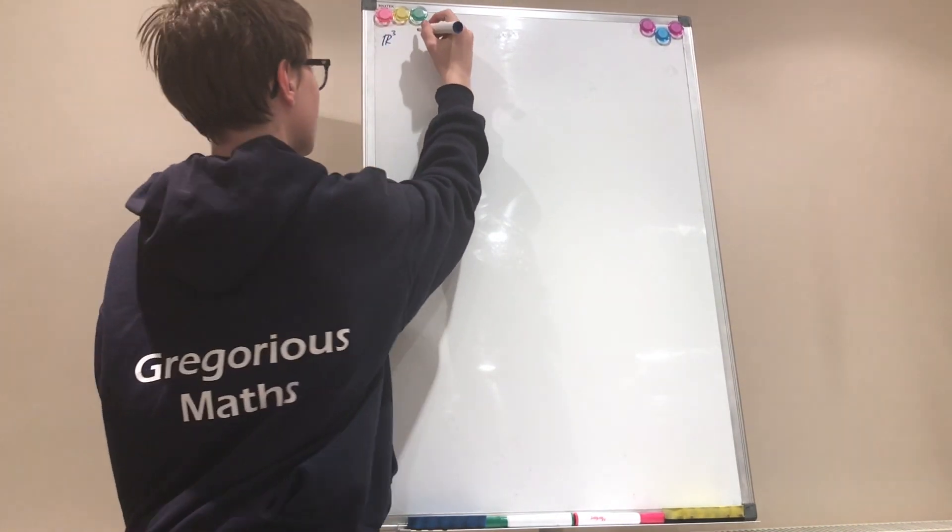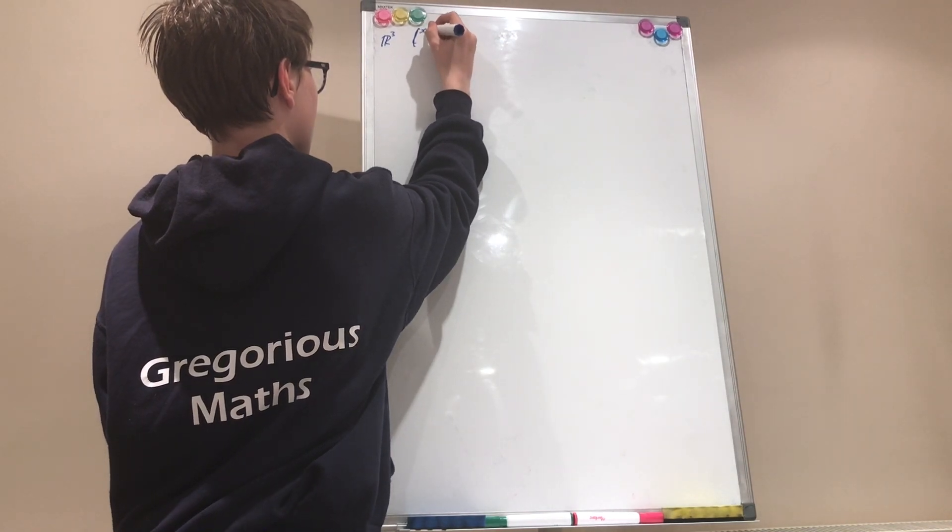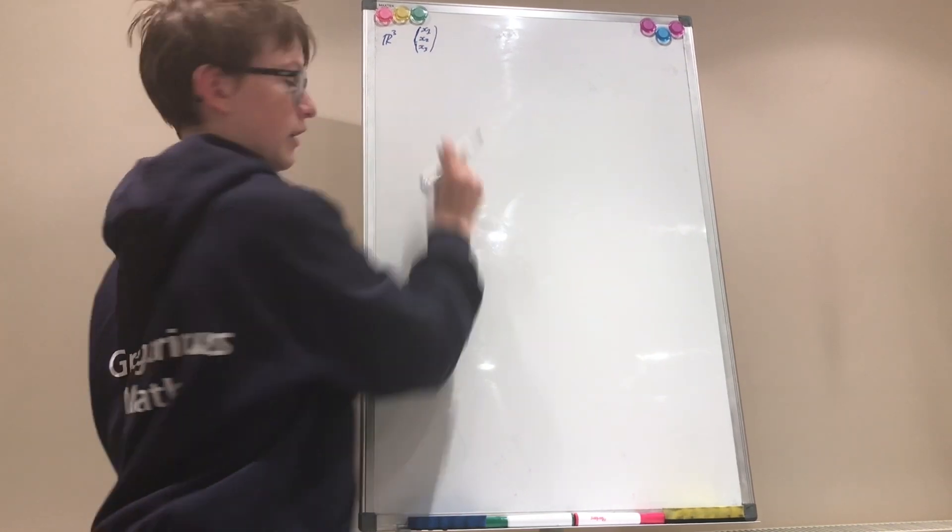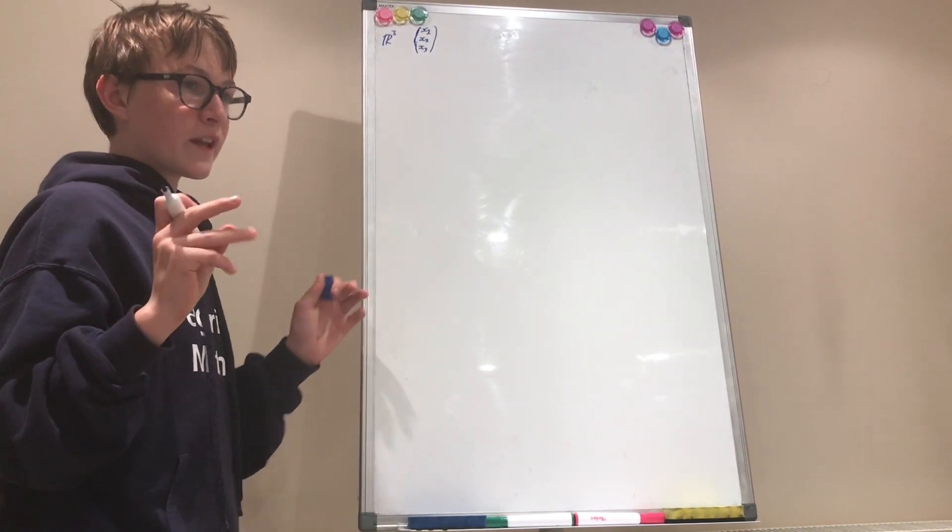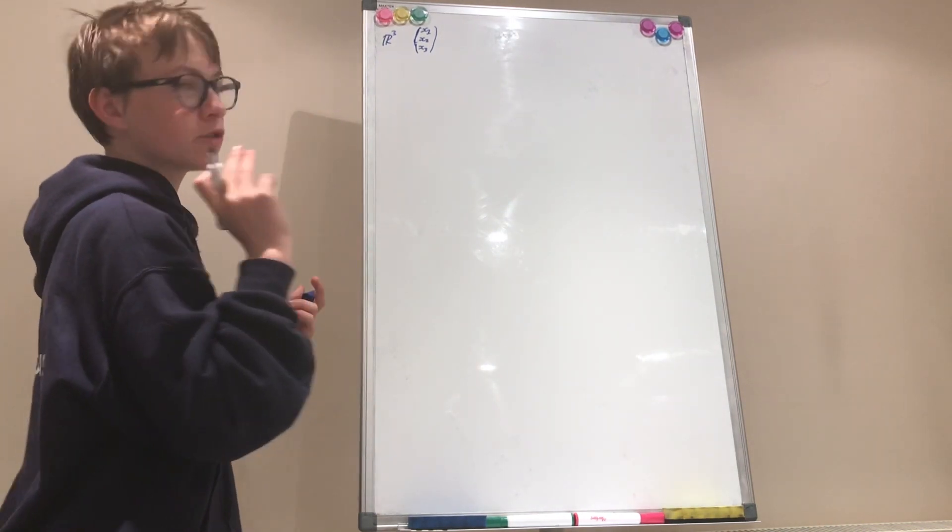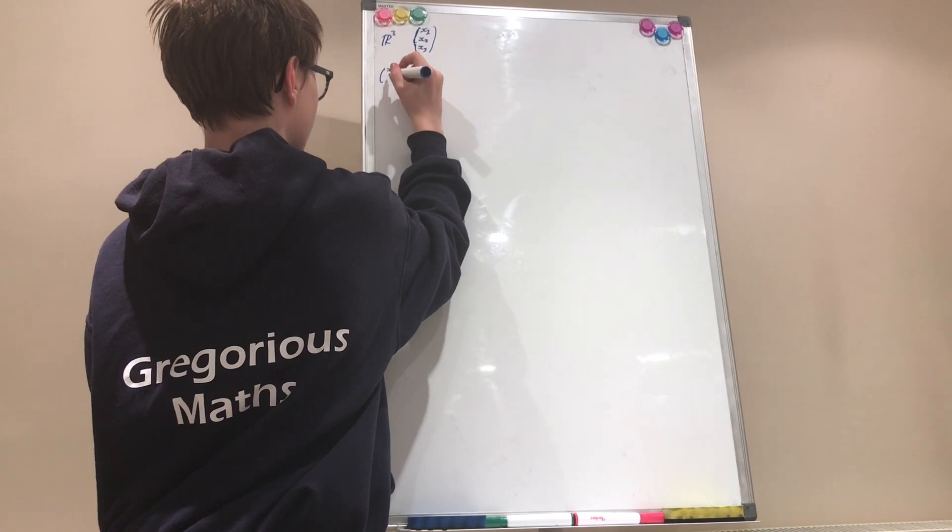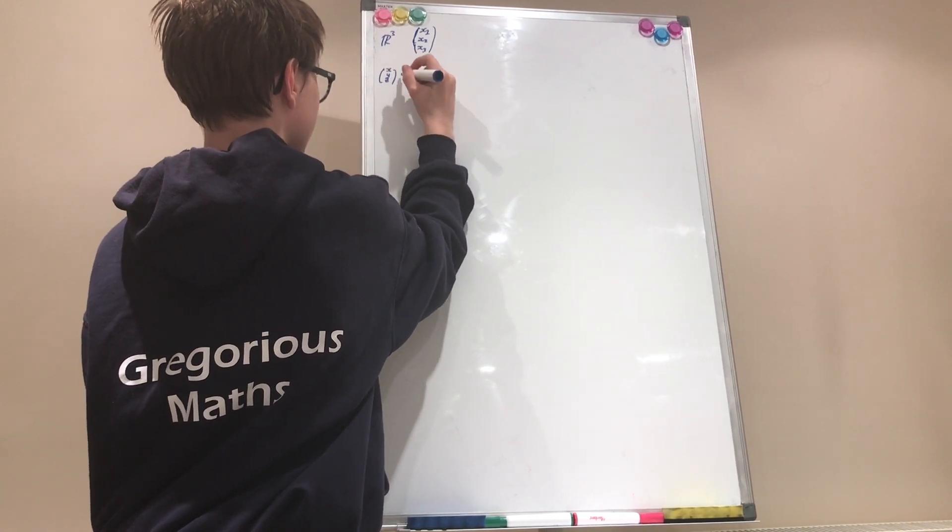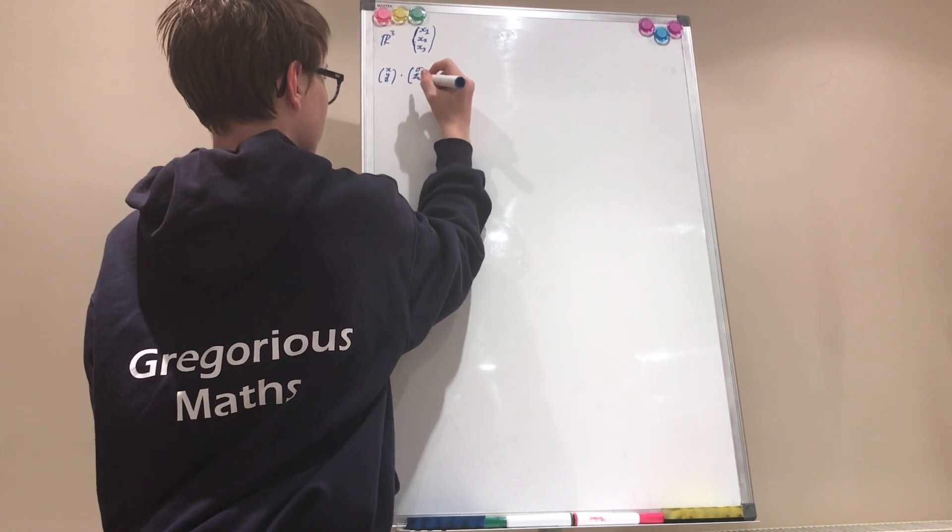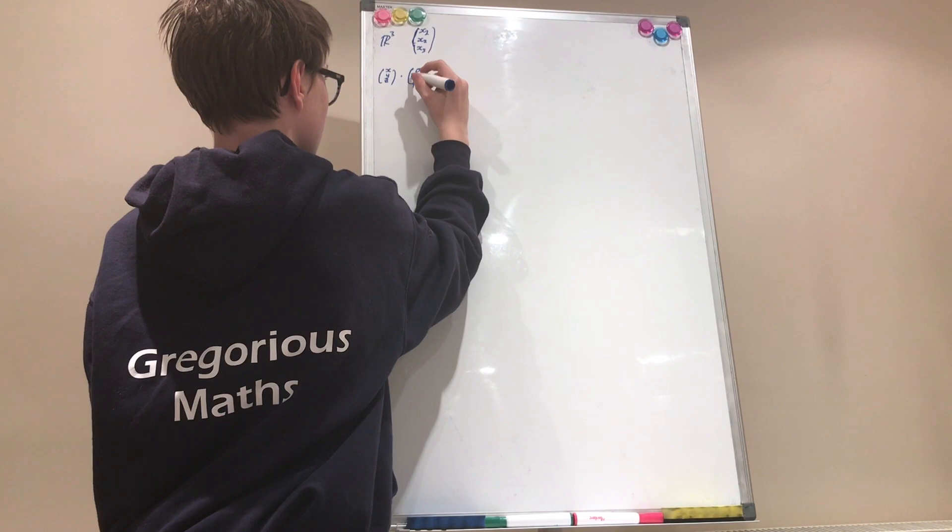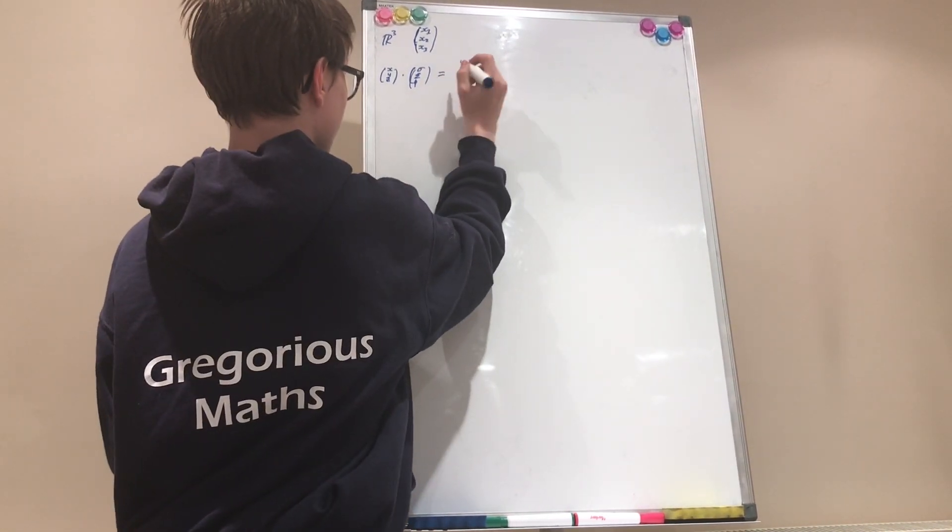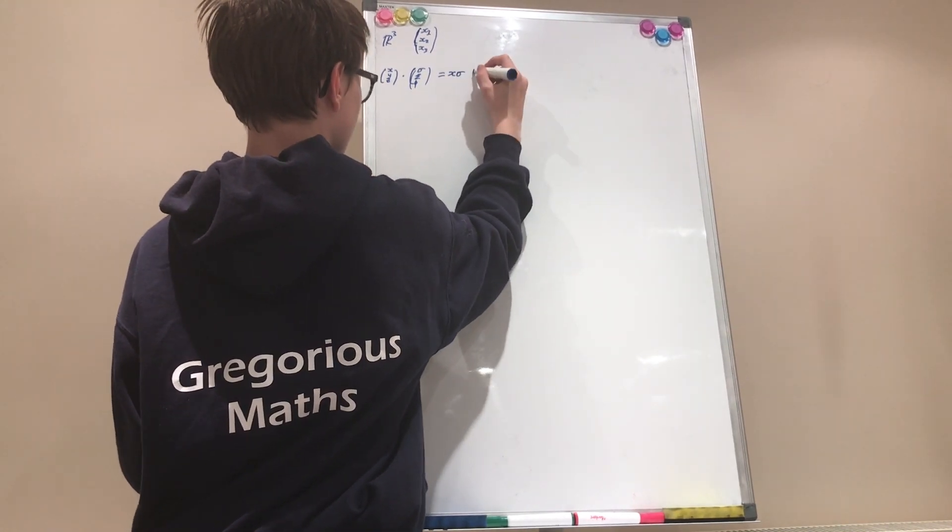So we have vectors which will look like this with three components. But we can define the notion of a dot product. The dot product is defined as (x, y, z) dot product (σ, σ, φ) - I don't know why I used Greek letters - is equal to xσ plus yσ plus zφ.